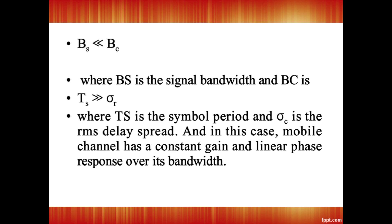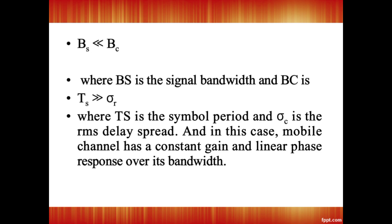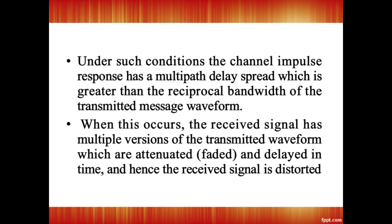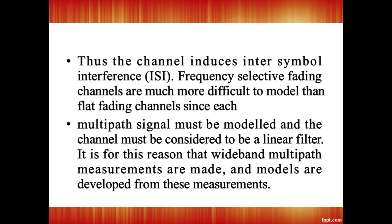So here Bs << Bc, where Bs is the signal bandwidth and Bc is the channel coherence bandwidth. Frequency selective fading: if the channel maintains a constant gain and linear phase response over a bandwidth that is smaller than the bandwidth of the transmitted signal, the channel impulse response has a multipath delay spread which is greater than the reciprocal bandwidth of the transmitted message waveform. Frequency selective fading is due to time dispersion through multipath.